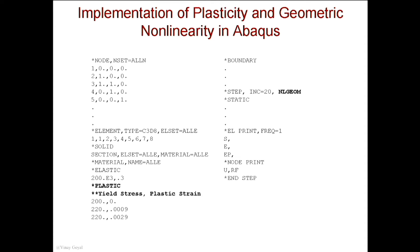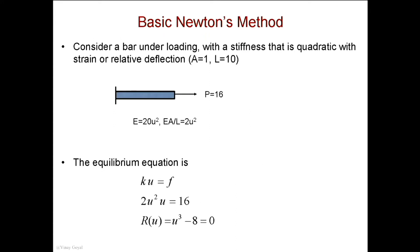Here's the simplest example I can think of to teach you about nonlinear finite elements. Say I apply a load of 16 pounds, but my modulus now depends on the deflection — the modulus equals 20 times U squared. Usually the modulus is constant, but here I've made it dependent on deflection. So Ea over L, with A equals 1 and L equals 10, gives K equals 2U squared. The equilibrium equation KU equals F becomes 2U cubed equals 16, which means U cubed minus 8 equals 0. I'll call this the residual.